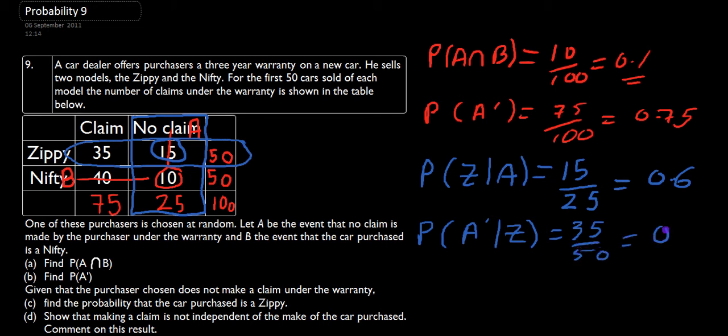Which equals 0.7. So the claim, if you know you've got a Zippy, is going to be lower than claims overall. Let's just look what happens if we deal with Nifties only. Let's just change the color, because this table is getting quite crowded. So we're just going to deal with the Nifties. So we're going to find the probability that we make a claim, so it's not A, given that we bought a Nifty.